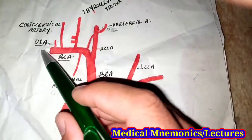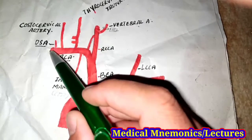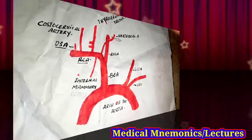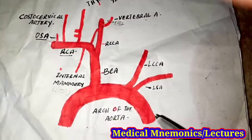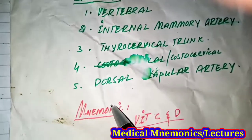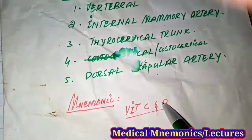The subclavian artery continues just below the lateral border of the first rib as the axillary artery. If you want to memorize the branches of the subclavian artery, we have a mnemonic: the mnemonic is 'Vitamin C and D.'